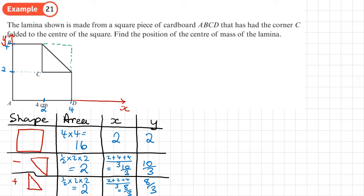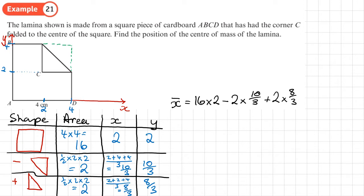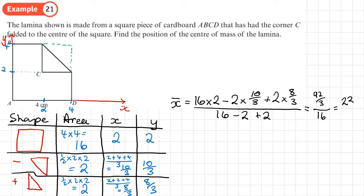Now we work out x-bar: we take each area times its center of mass in the x-direction. So we have 16 × 2, minus 2 × (10/3) for the missing corner, plus 2 × (8/3) for the folded-over triangle, all divided by 16 − 2 + 2. That gives 92/3 divided by 16, which equals 23/12.